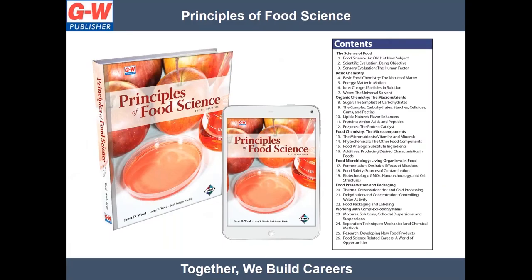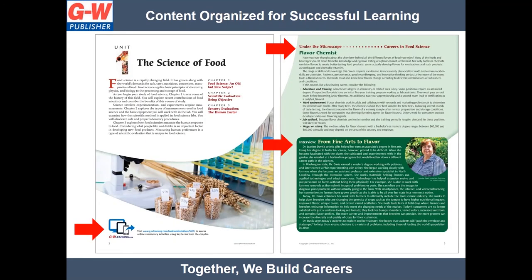Principles of Food Science is designed to help students learn about the relationships among science, food, and nutrition. Basic laws of chemistry, microbiology, and physics are applied to the production, processing, preservation, and packaging of food. Students will explore the characteristics of each component found in food, examine the helpful and harmful effects of microorganisms on the food supply, and find out how the complex mixtures in foods are combined and separated.